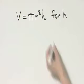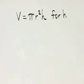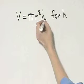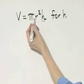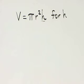Let's solve this formula for h. So first, let's find h. Notice this is pi times r squared times h. This is simply one term on the right.